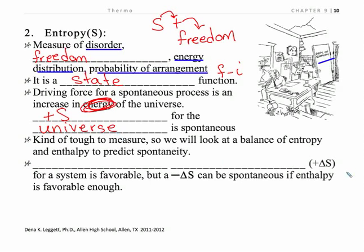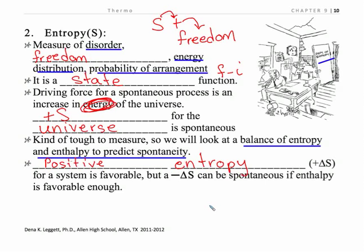Unfortunately, discussing or measuring the entropy of the universe is not an easy thing to do. So what we're going to be looking at is a balance of these two key factors — the entropy and the enthalpy of the system. We can focus in on the system to predict spontaneity. A positive entropy is favorable, whereas with enthalpy, it's negative that's favorable. A negative entropy can still be spontaneous, but it has to be balanced out by the enthalpy.